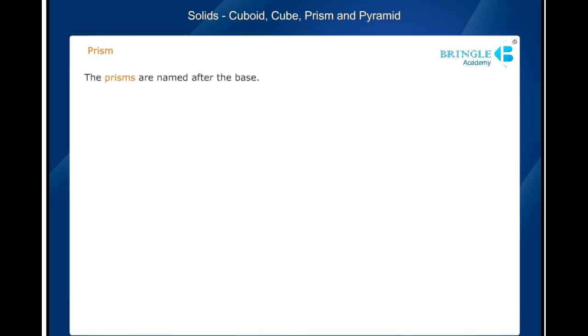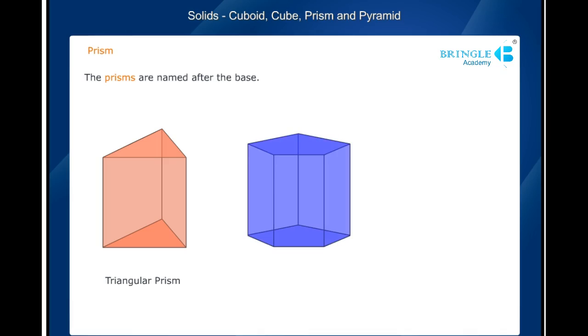The prisms are named after the base. If the base is a triangle, the prism is called a triangular prism. If the base figure is a pentagon, the prism is called a pentagonal prism. Displayed here are a few prisms with their names. Go through their names and observe the base of the prisms.